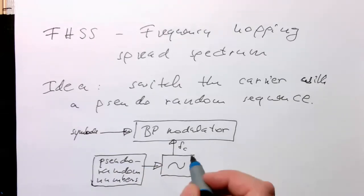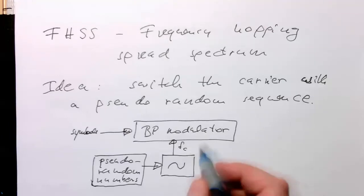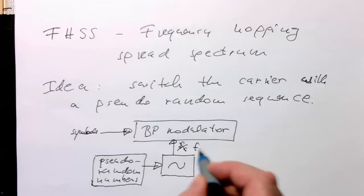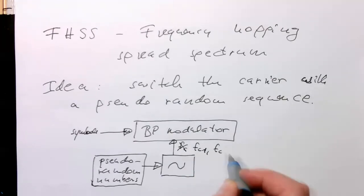So that we no longer have FC here. But we have a sequence of FC, FC1, maybe then FC3, FC, FC2, and then FC7.